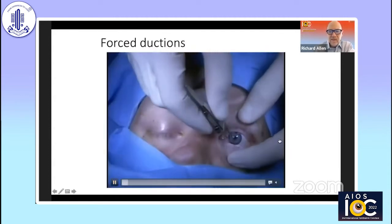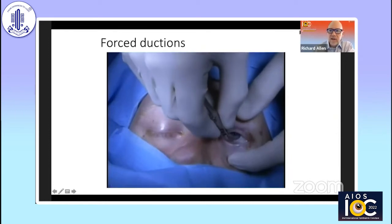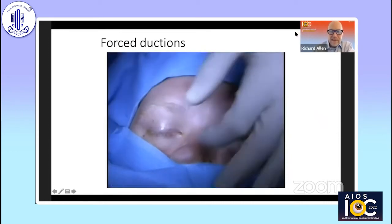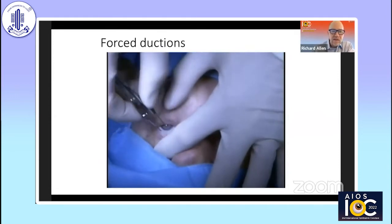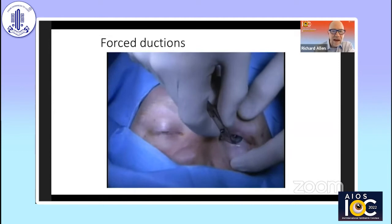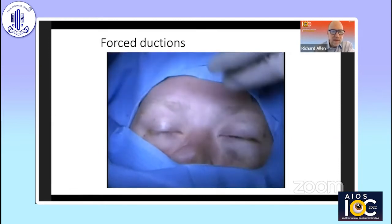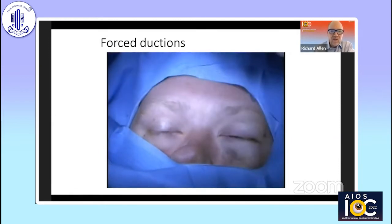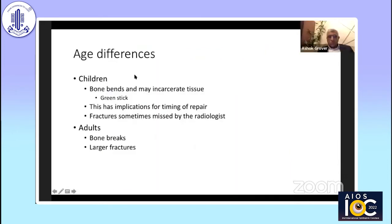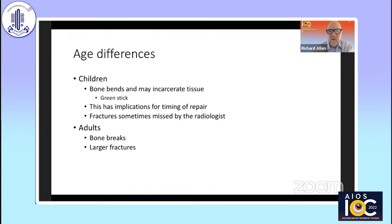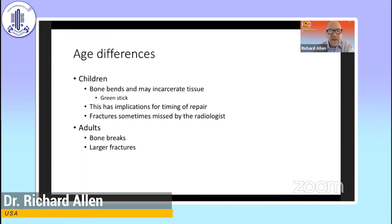How do we figure out if someone has positive forced ductions? For me, this is usually an intraoperative maneuver. I rarely do this in the clinic, but I do perform forced ductions before and after surgery in the operating room — to prove that I have a restrictive strabismus before, and at the end of surgery that I have released that tissue. One of the biggest things to always remember is that there are differences in indications and timing of repair depending upon age. In children, bone bends and incarcerates tissue — essentially a greenstick fracture — and these fractures can be missed by the radiologist.